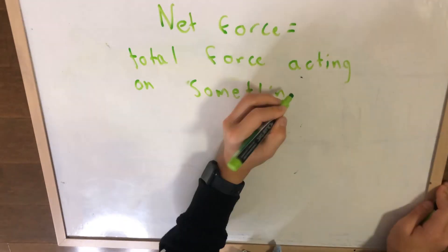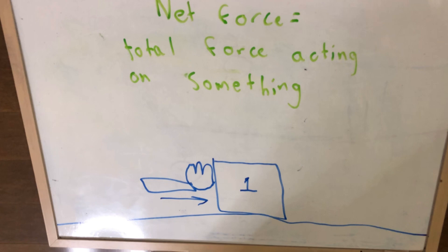Now, this last part is not related to velocity, but I feel that it's really important to tell you guys. Net force is the total force acting on something. So let's say if I'm pushing a cube around, then the total force on it would be 1, as 1 equals to 1 push.